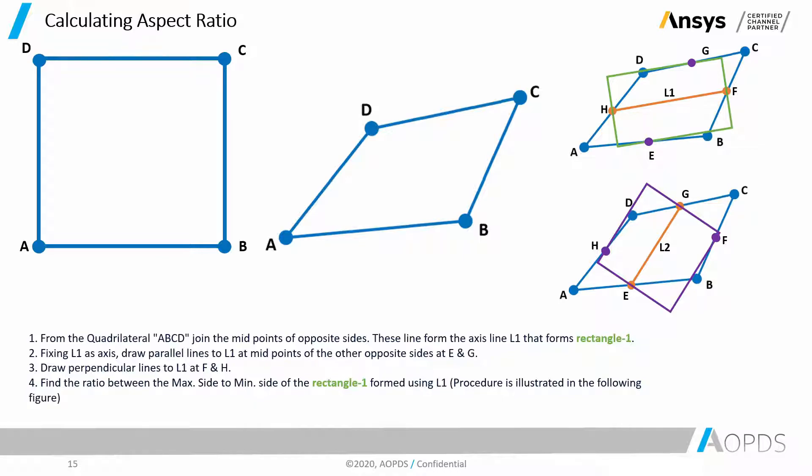Fixing L1 as axis, draw parallel lines to L1 at midpoints of the other opposite sides at E and G. Draw perpendicular lines to L1 at F and H.